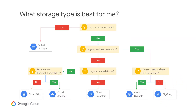This flowchart shows the decision tree for determining, based on the use case, which storage solution would be utilized. If you need a solution to hold files, backups, logs, and blobs, for example, a good unstructured solution would be Cloud Storage.